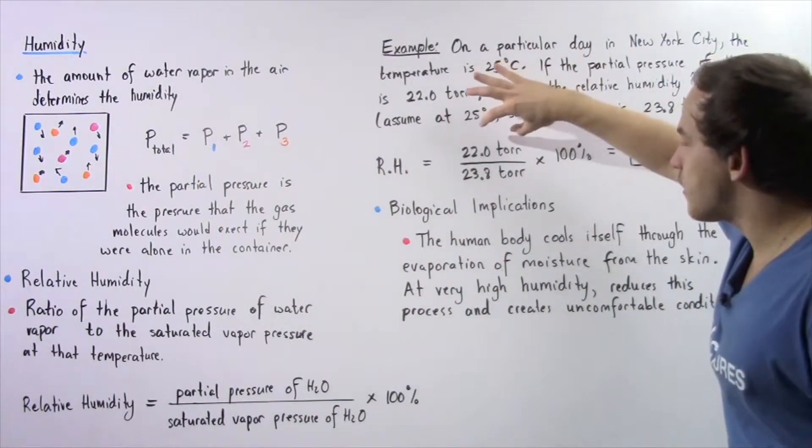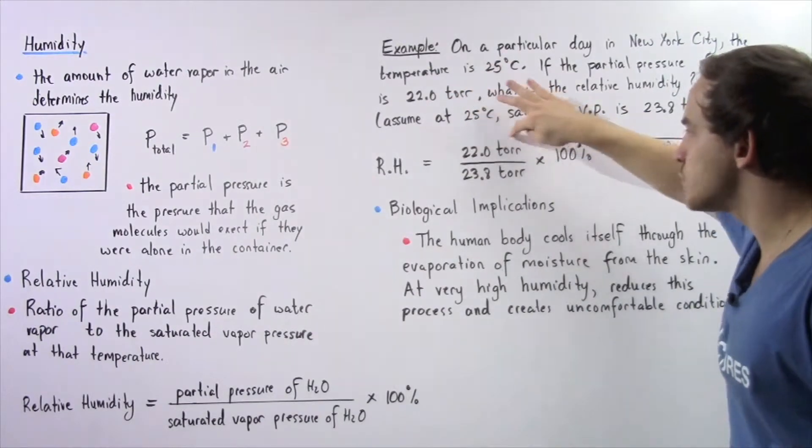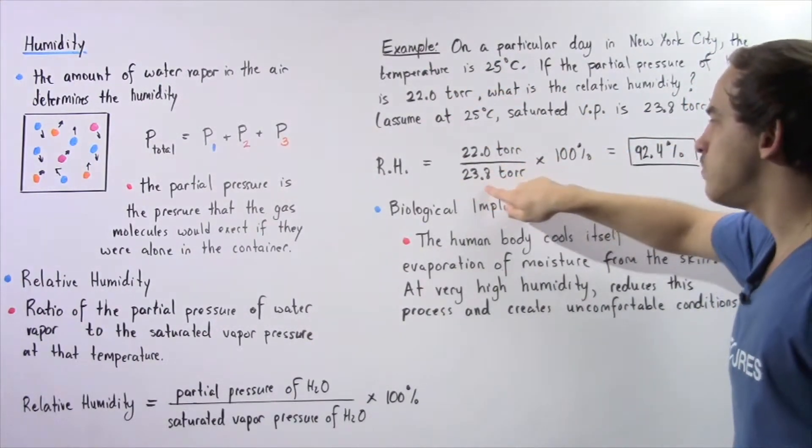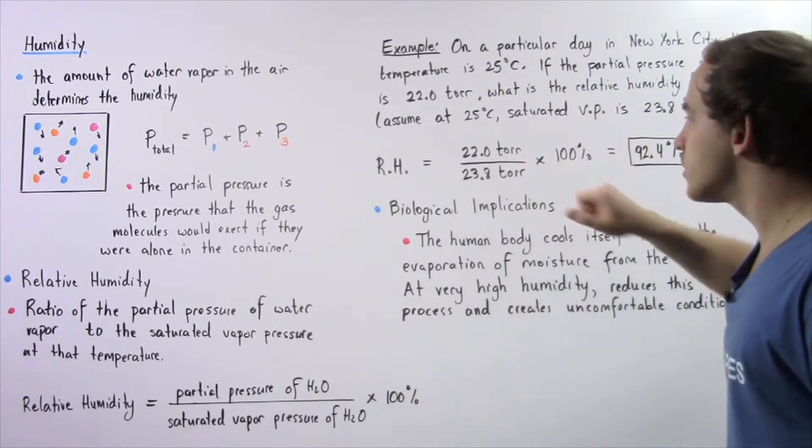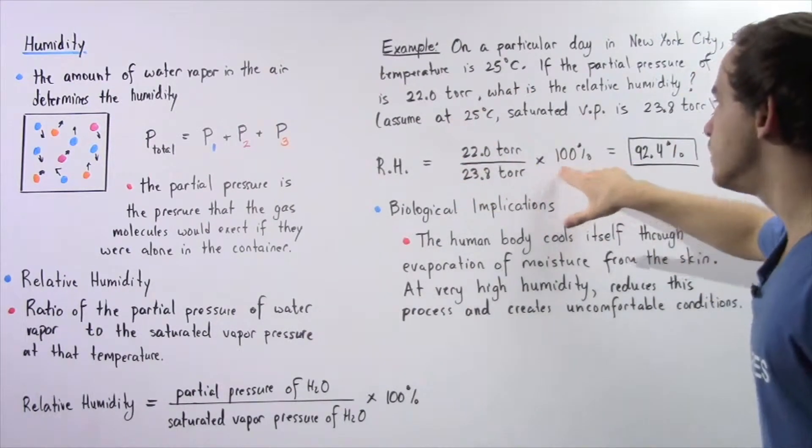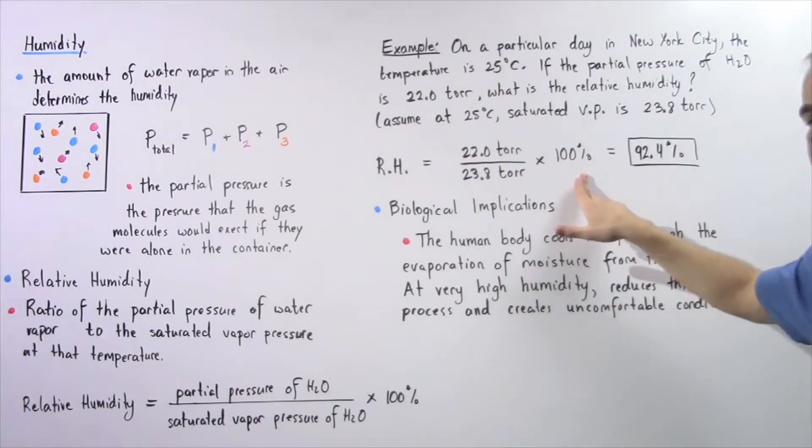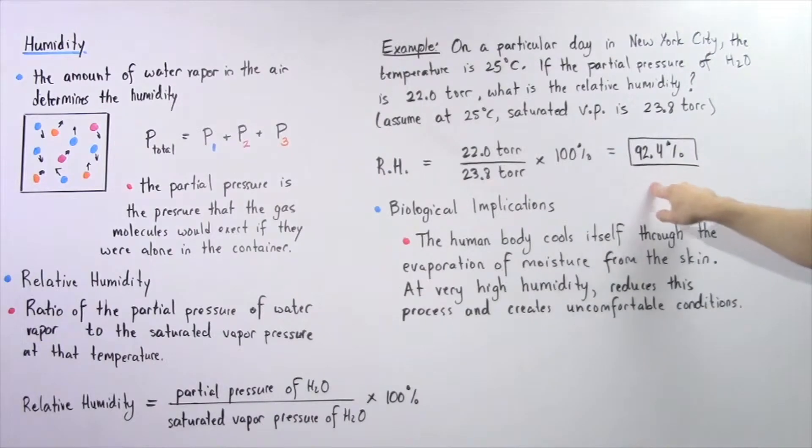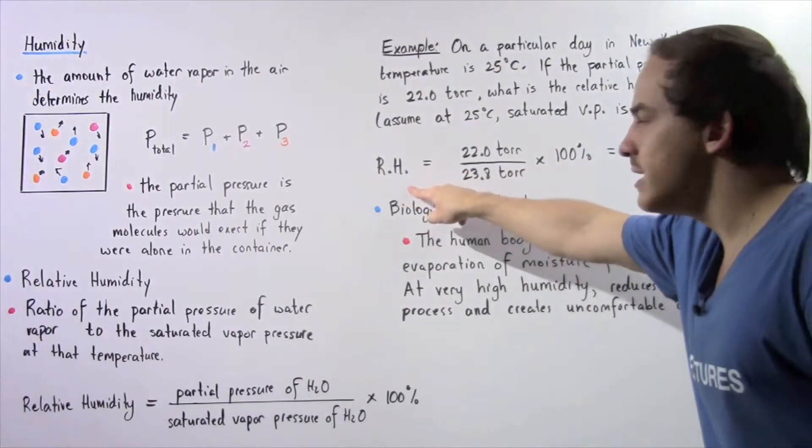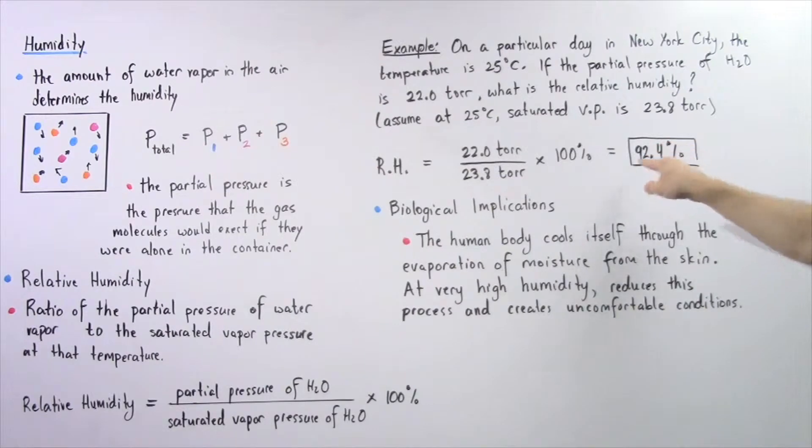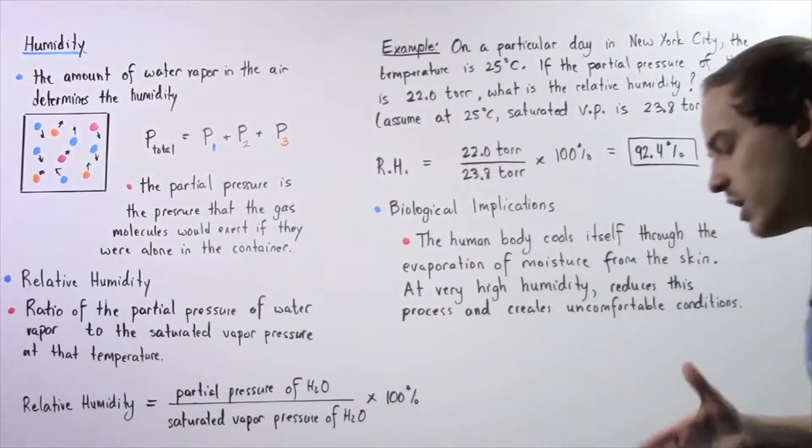To find the relative humidity, we take the fraction of 22 Torr divided by 23.8 Torr. The Torr cancel, we multiply it by 100%, and we find that our relative humidity of the air under these conditions is 92.4%.